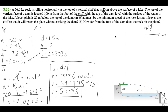Since there is no y-component to the initial velocity, it's just 50 meters per second horizontally in the direction the rock was already rolling. Note that it's asking for speed, so direction doesn't need to be specified. Now for part B: how far from the foot of the dam does the rock hit the plane? We're now looking for the landing point, which is 25 meters below the top of the dam. The rock will just skim past the face of the dam.